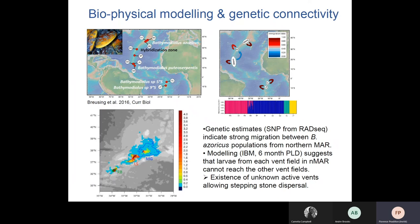Genetic analysis showed that exchange of migrants is high within the distribution areas of each of these species. However, simulation of larval dispersal using modeling focused on the northern side, where the species Bathymodiolus azoricus occurs, failed to connect vent sites within this zone. To reconcile genetic connectivity patterns with modeling predictions, the authors hypothesized the existence of intermediate sites that would support other mussel populations, allowing stepping-stone dispersal between distant sites.